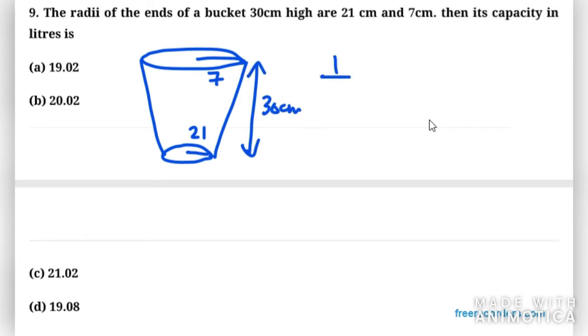So we have the formula: 1/3 × π × h × (R² + r² + R×r).